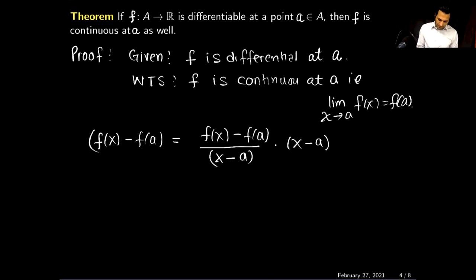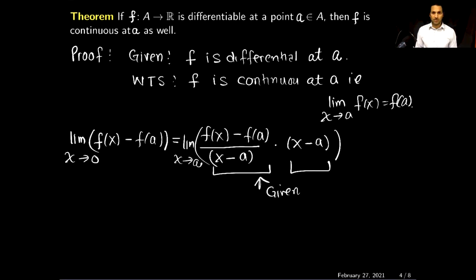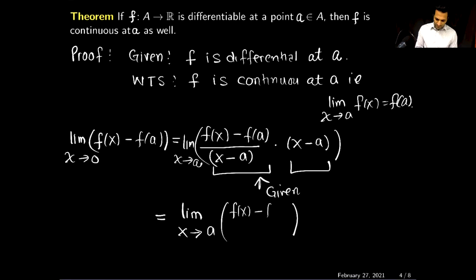Now I will take the limit on both sides as x approaches a, and use the algebraic limit theorem on the right-hand side. Notice that both limits exist: this first limit exists because it is given that F is differentiable, and (x minus a) is a polynomial so its limit also exists. So by the algebraic limit theorem I have: the limit of [F(x) minus F(a)] over [x minus a], times the limit of [x minus a] as x approaches a.